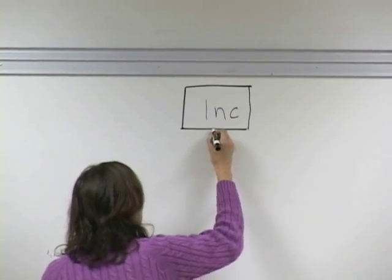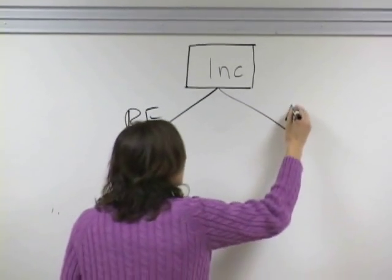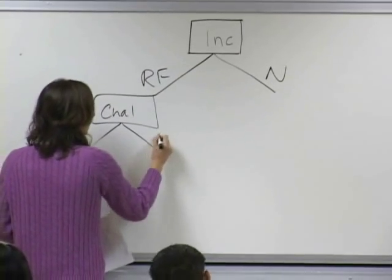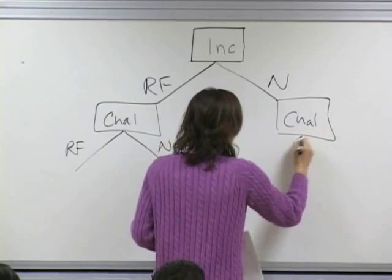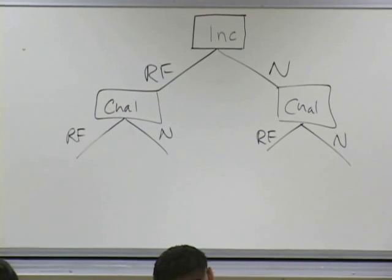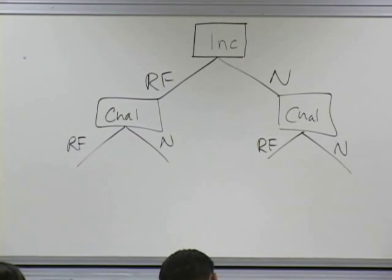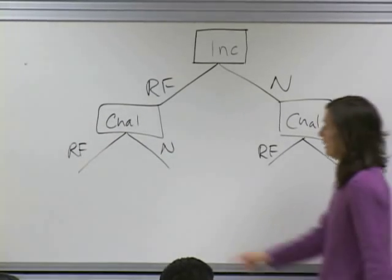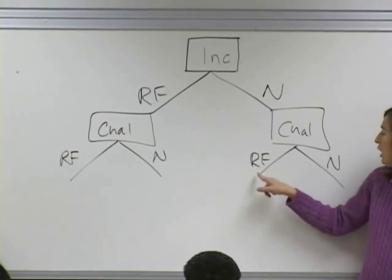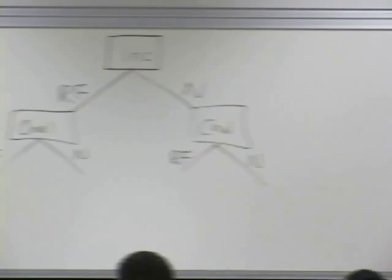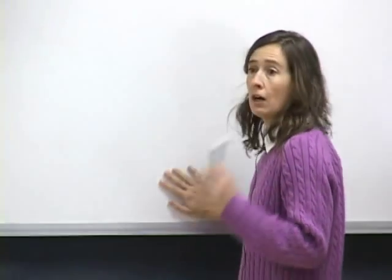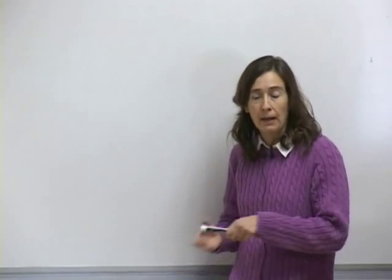The specific scenario stays the same: same story, incumbent and challenger each choosing to raise funds or not. Same assumptions about who the players are, their moves, and the outcomes. The incumbent wins in three of the four branches; the only way the challenger can win is if the challenger raises funds and the incumbent doesn't. What I'm going to change is the payoffs—I'll use variables to represent different aspects of the payoffs.